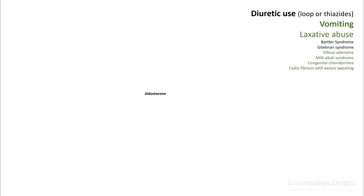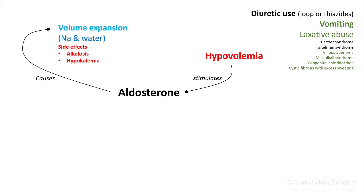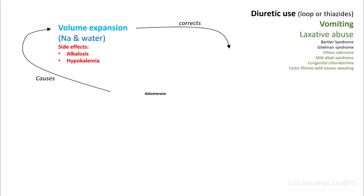Any hypovolemia stimulates aldosterone production and aldosterone results in volume expansion by retaining salt and water. Consider alkalosis and hypokalemia to be side effects of hyperaldosteronism. The volume expansion corrects the hypovolemia, your stimulation goes down, and everything comes back to normal.